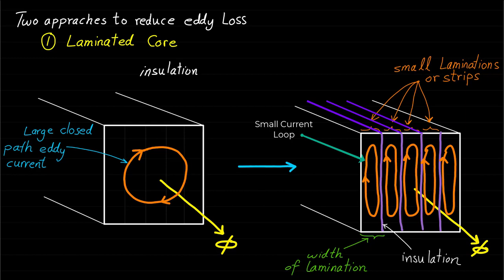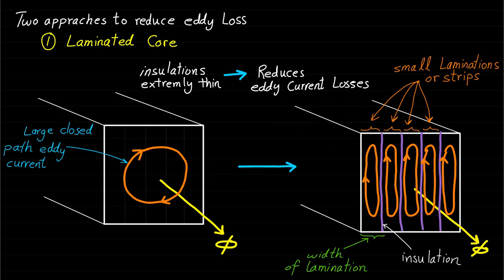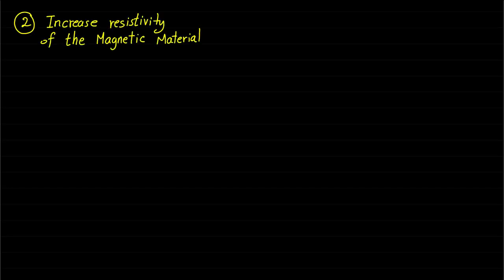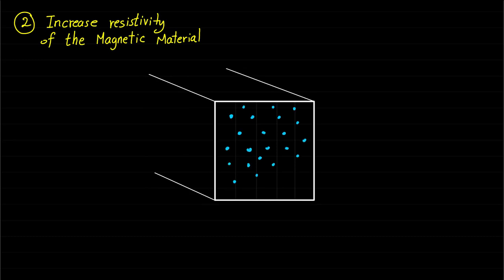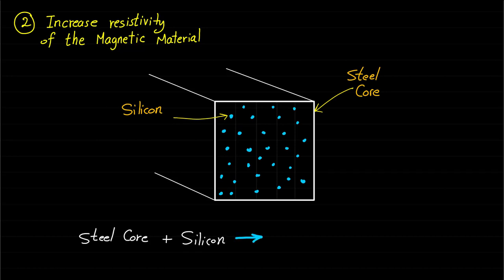Because the insulation layers are extremely thin, this action reduces eddy current losses with very little effect on the core's magnetic properties. The second approach of reducing the eddy current losses is to increase the resistivity of the core material. This is often done by adding some silicon to the steel of the core. If the resistance of the core is higher,